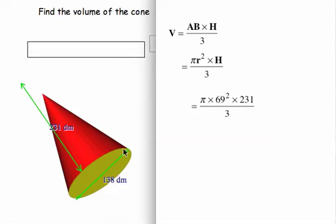And the radius is going to be half the diameter. The diameter is 138 decimeters. So the radius is going to be 69 decimeters. And so pi times 69 squared times the height, which is 231 decimeters divided by 3.